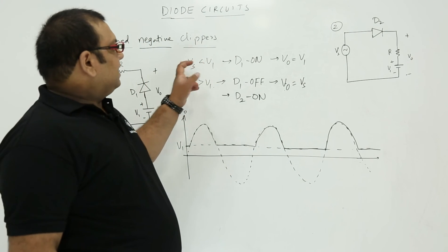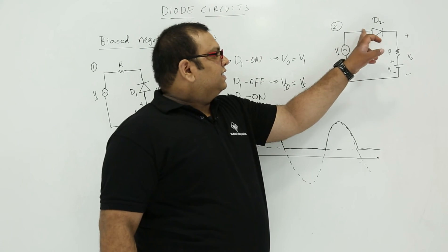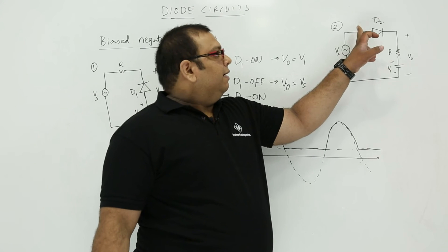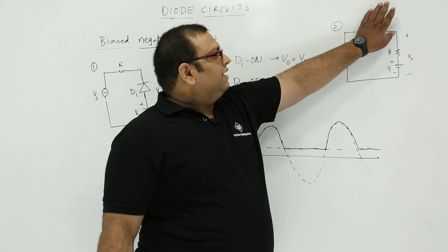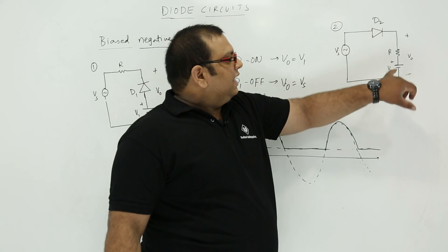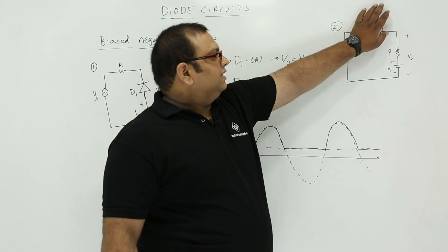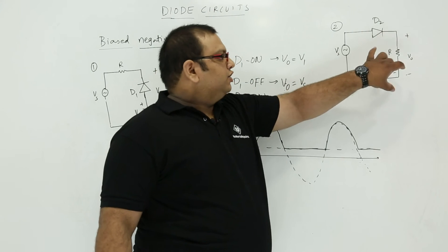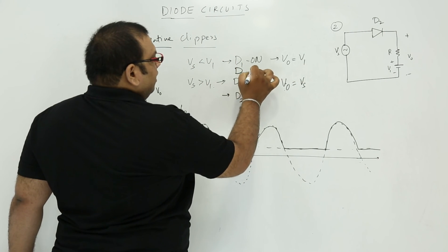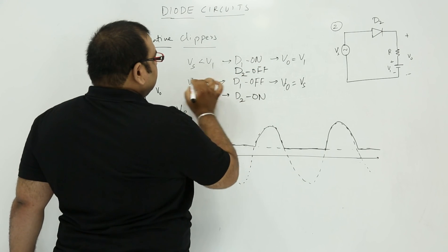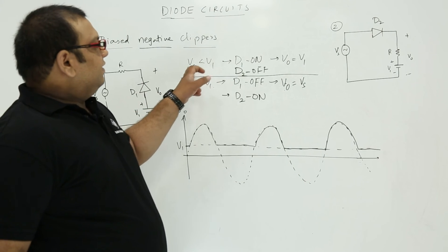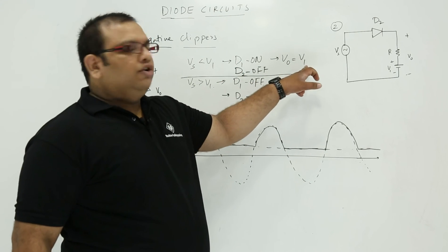Now let us take the other case: when Vs is less than V1. Here on the negative side we have V1, but Vs is less than V1, so the positive side is less. The diode is in reverse bias. When the diode is in reverse bias, this voltage will be same as V1. Because this is open circuit, V0 is equal to V1 only. So when diode D2 is in off condition and Vs is less than V1, V0 is equal to V1.